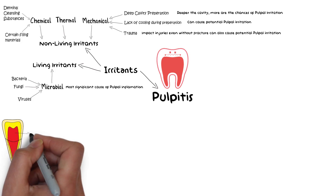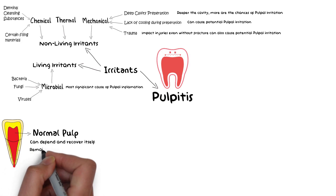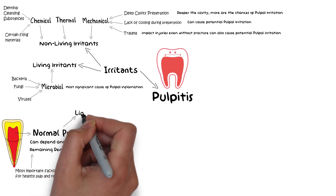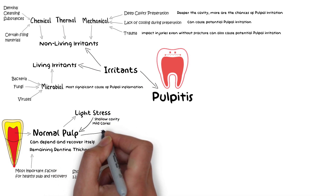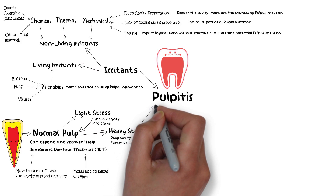A normal healthy pulp doesn't get irritated that easily and can recover itself, but over time, due to repeated exposure to different stresses, the pulpal tissue may become compromised. The remaining dentinal thickness, or RDT, is a very important factor for a healthy pulp because dentine prevents direct contact between the pulp and bacteria. If the remaining dentinal thickness is reduced to less than 1.1 to 1.5 mm, inflammatory cells in the pulp increase many times. Therefore, slight injuries such as pits and fissure caries and shallow cavity preparations cause no inflammation in the pulp, while deep caries and extensive operative procedures result in a more severe pulpal inflammatory response and hence result in pulpitis.